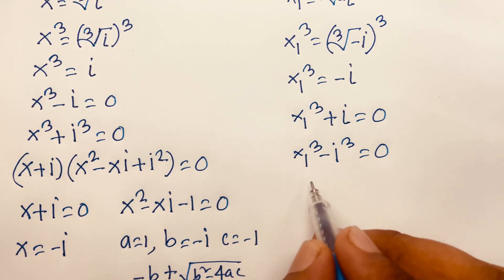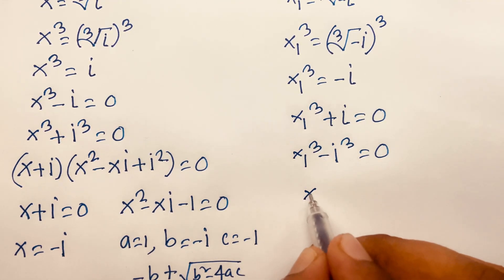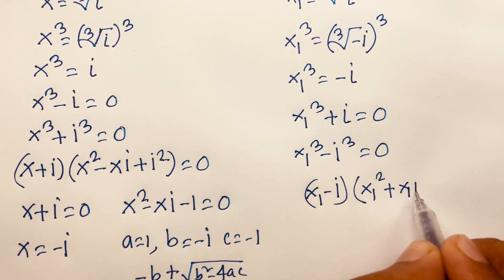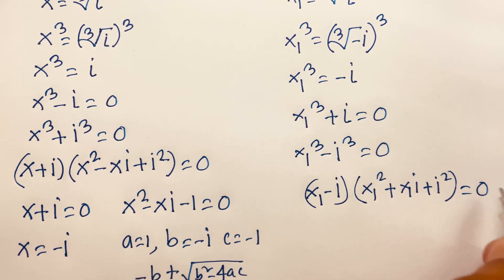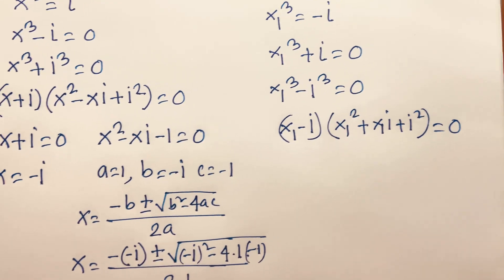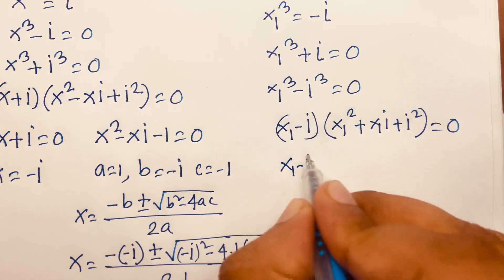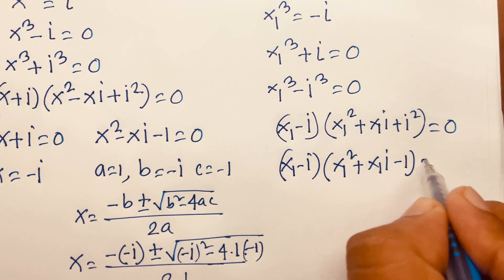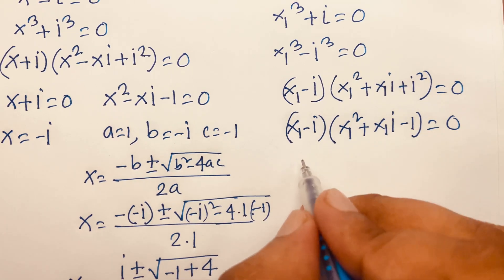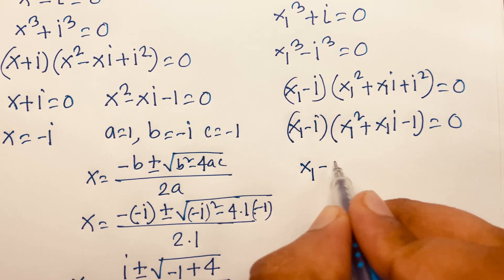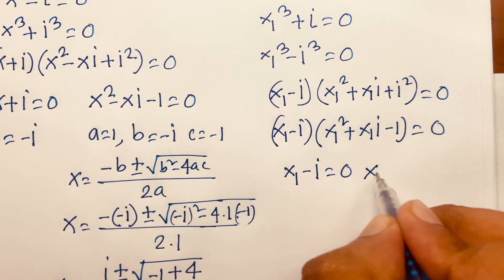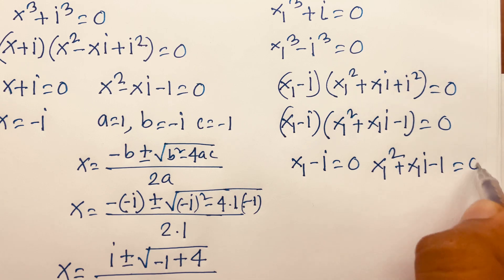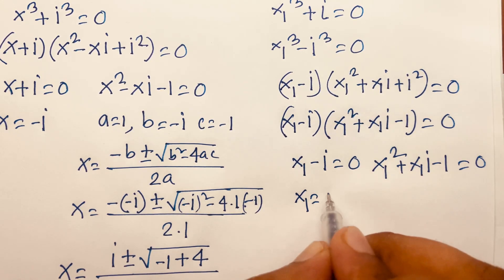Using the difference of cubes identity a cubed minus b cubed equals (a minus b)(a squared plus ab plus b squared) equals zero, we get x1 minus i times x1 squared plus x1 times i minus 1 equals zero. There are two cases: the first case gives x1 minus i equals zero, so x1 equals i. The second case is the quadratic x1 squared plus x1 times i minus 1 equals zero.